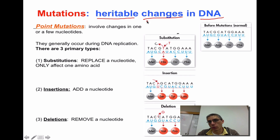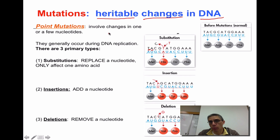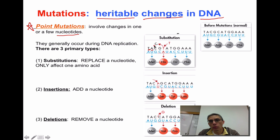We look at mutations in two categories: those that occur involving maybe one or a few nucleotides — in other words, one or a few of those nitrogen bases on that DNA strand — and chromosomal mutations, which occur on larger segments of that chromosome and can sometimes cause a lot more damage than mutations that only involve a few nucleotides.